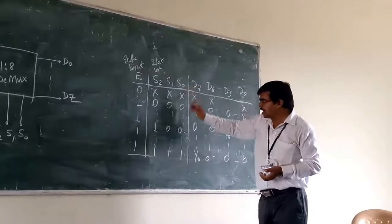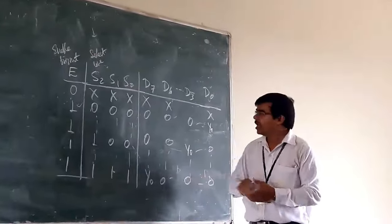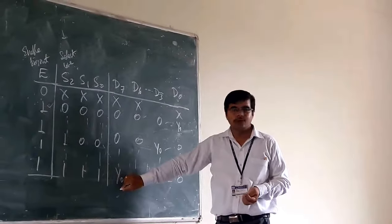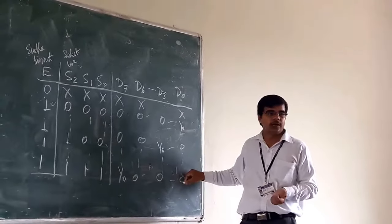Now, suppose if the select line is 1, 1, 1, then at the D7, you will get output. Remaining equal to 0 only.